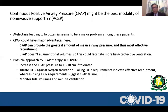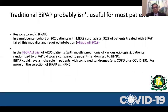Regarding CPAP: it provides the greatest mean airway pressure and is the most effective for recruitment. You can start between 15 and 18 and adjust based on the patient's response. If oxygen improves and the patient becomes more alert, CPAP is working. If the patient deteriorates or becomes lethargic, consider intubation. For traditional BiPAP in COVID — a multicenter trial in MERS patients showed 92% failed this modality and required intubation. BiPAP is more useful than CPAP if there is hypercapnia or COPD.